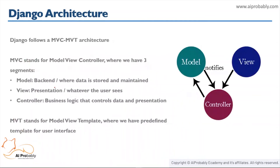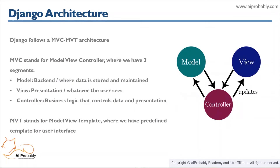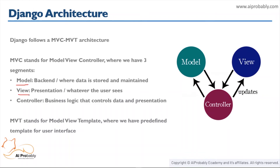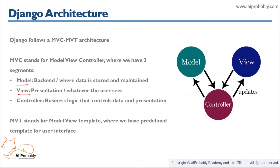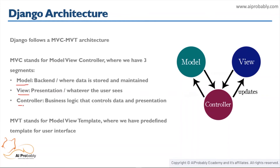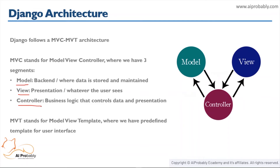Now let's understand what architecture Django follows. Django follows MVC-MVT architecture, where MVC stands for Model-View-Controller. The Model is used for storing and maintaining your data — it is the backend where your database is defined. The View is all about presentation and is not aware of the backend; whatever the user sees is referred to as a view. The Controller is the business logic that interacts with both the model and the view.